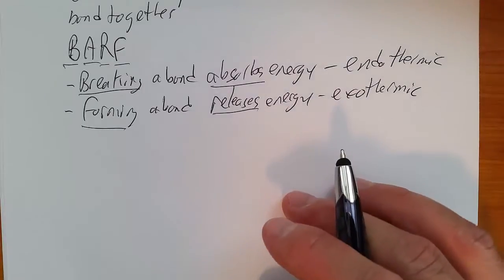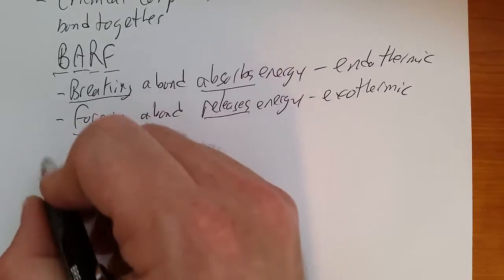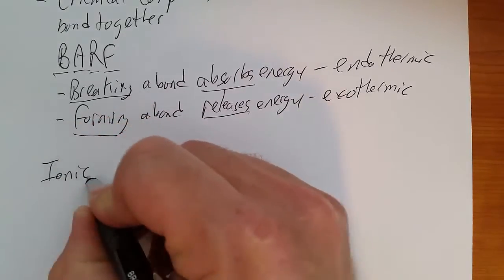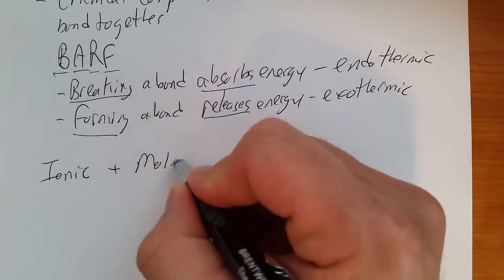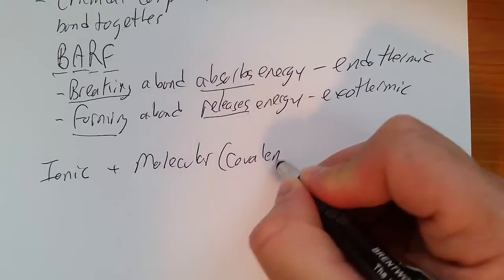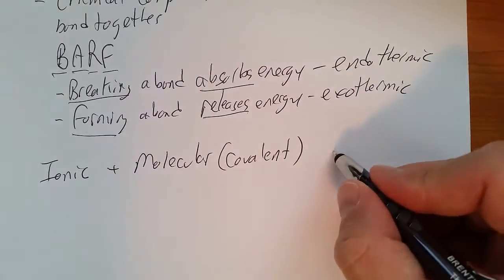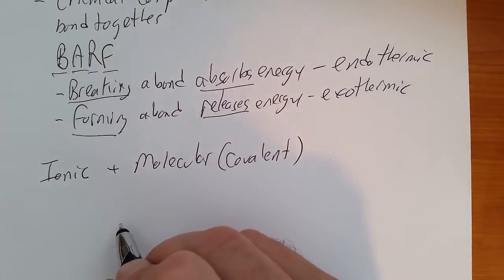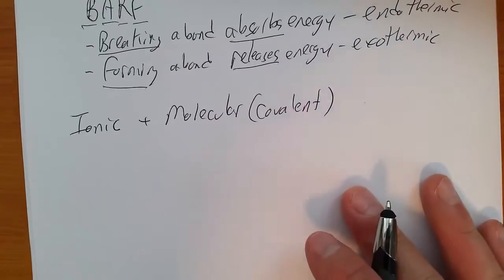As we talked about in Unit 3, there are two major categories of compounds: ionic and molecular, a.k.a. covalent compounds. We have to remember certain things about each of them.